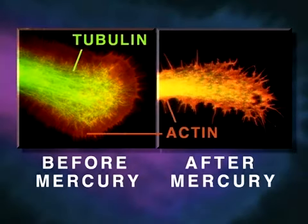Shown here is a neurite growth cone stained specifically for tubulin and actin, before and after mercury exposure. Note that the mercury has caused disintegration of tubulin microtubule structure.